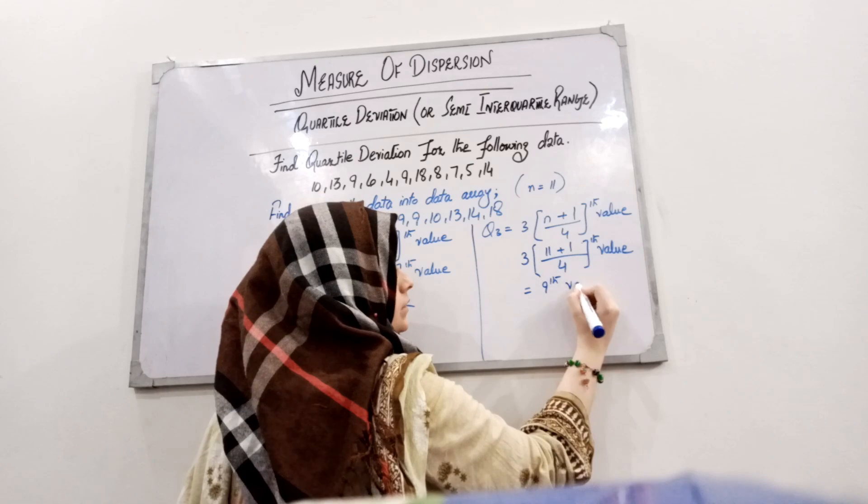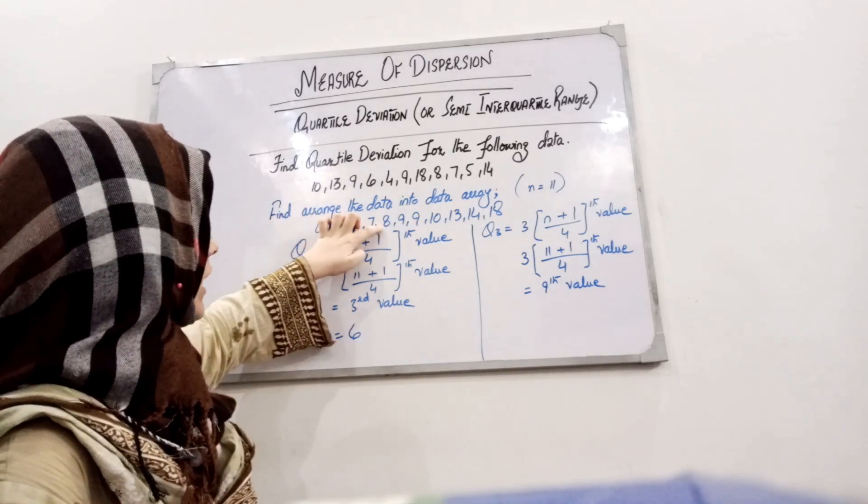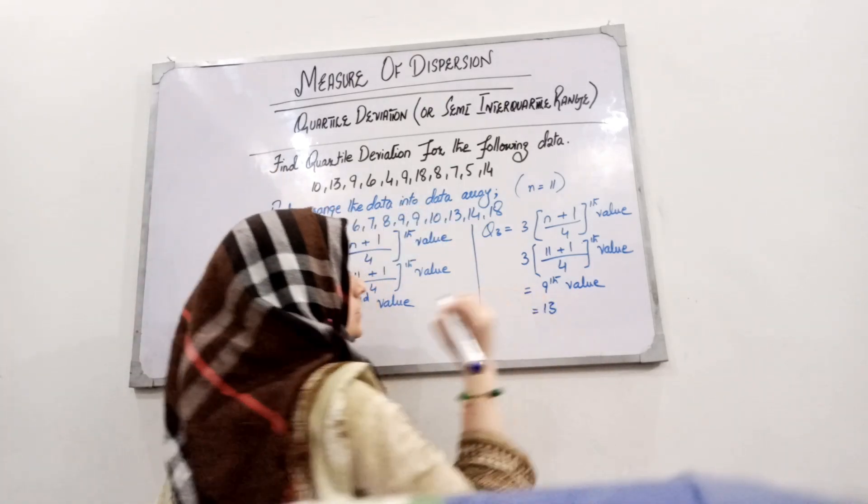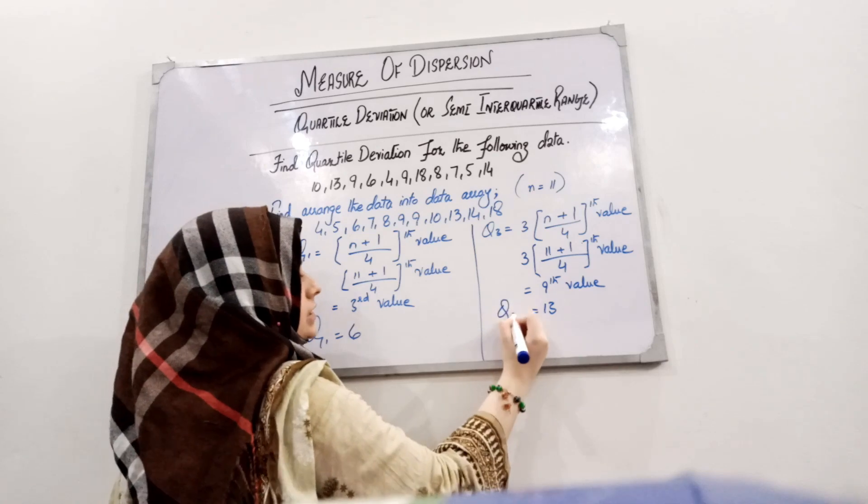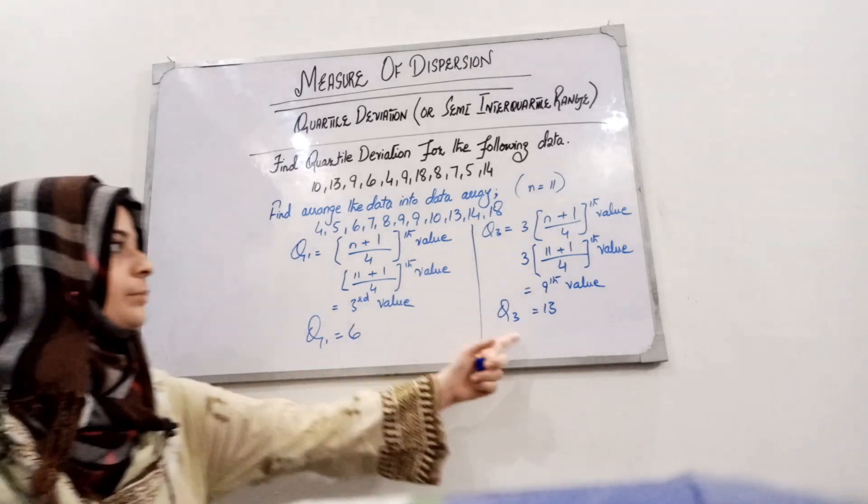The ninth position. Now let's see what is the ninth value: one, two, three, four, five, six, seven, eight, nine, which is 13. So we have Q3 which is 13 and Q1 which is 6. With the help of these, we...